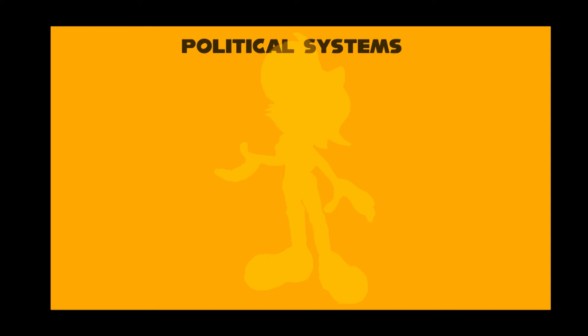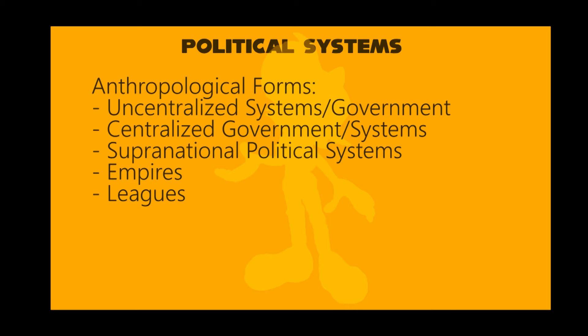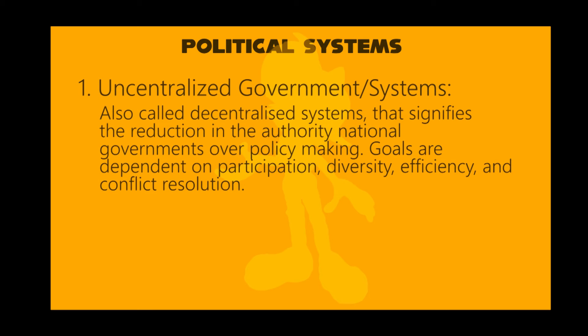Now we go ahead and find out the types in anthropological form: uncentralized systems, centralized governments, supranational political systems, empires, and leagues. Let's start with uncentralized systems, also called decentralized systems. Political decentralization signifies a reduction in the authority of national governments over policymaking.